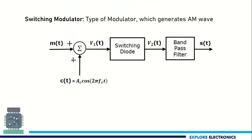What is a switching modulator? A switching modulator is a type of modulator. This circuit is going to generate an amplitude modulated wave. We are going to use this switching modulator whenever AM wave generation is required.